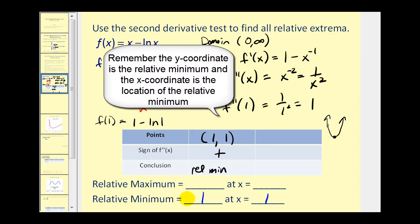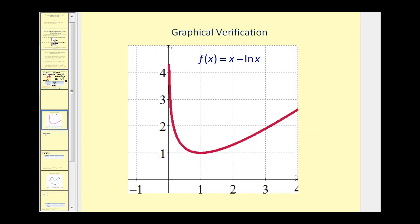Remember, sometimes relative extrema can be expressed as an ordered pair; other textbooks want it written out explicitly. Let's verify with a graph. Here's the point (1, 1), and we can see that it is indeed a relative minimum — a low point on the graph.